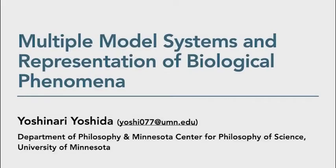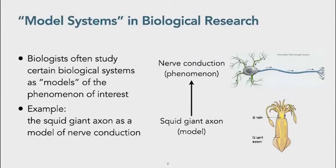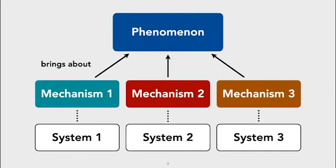Welcome to my presentation: 'Multiple Model Systems and Representation of Biological Phenomena.' Biologists often study certain biological systems as models of the phenomenon of interest. A famous example is the squid giant axon as a model of nerve conduction in neurophysiological research.